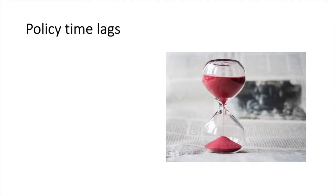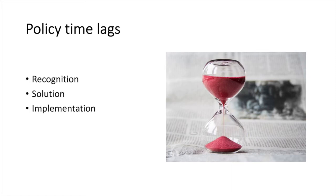Pretty much all government policy typically faces three lags. The first lag is in recognition, which means identifying a problem in a timely manner. The second lag is in the time it takes to develop and argue a solution. Typically, the government must develop a set of solutions and adopt which one is most suitable for the problem at hand. Throughout this process of developing a solution, arguing which one is the best and then choosing one, precious time is passing.